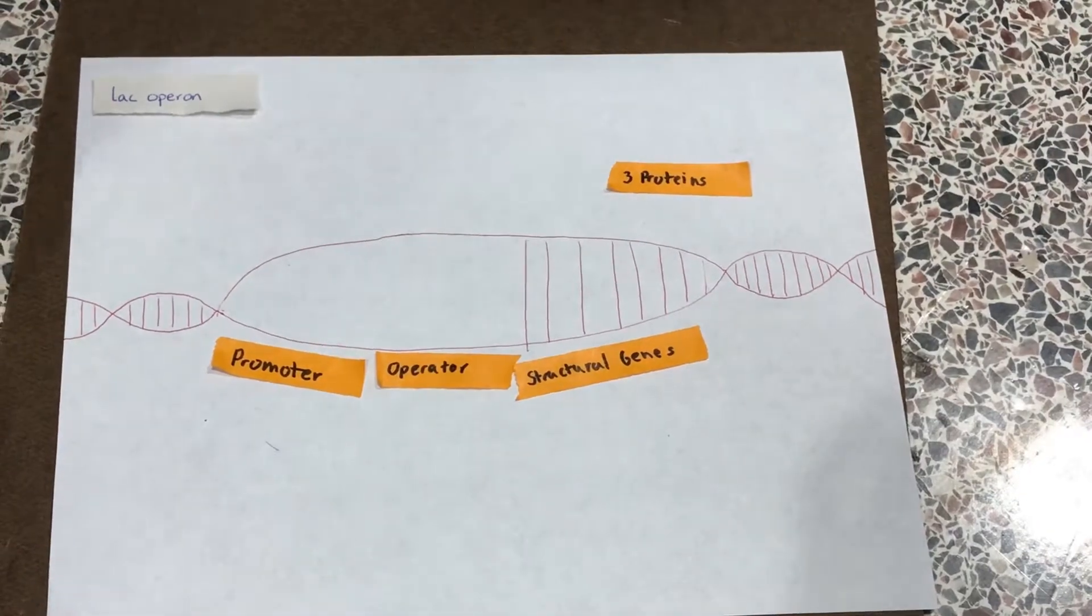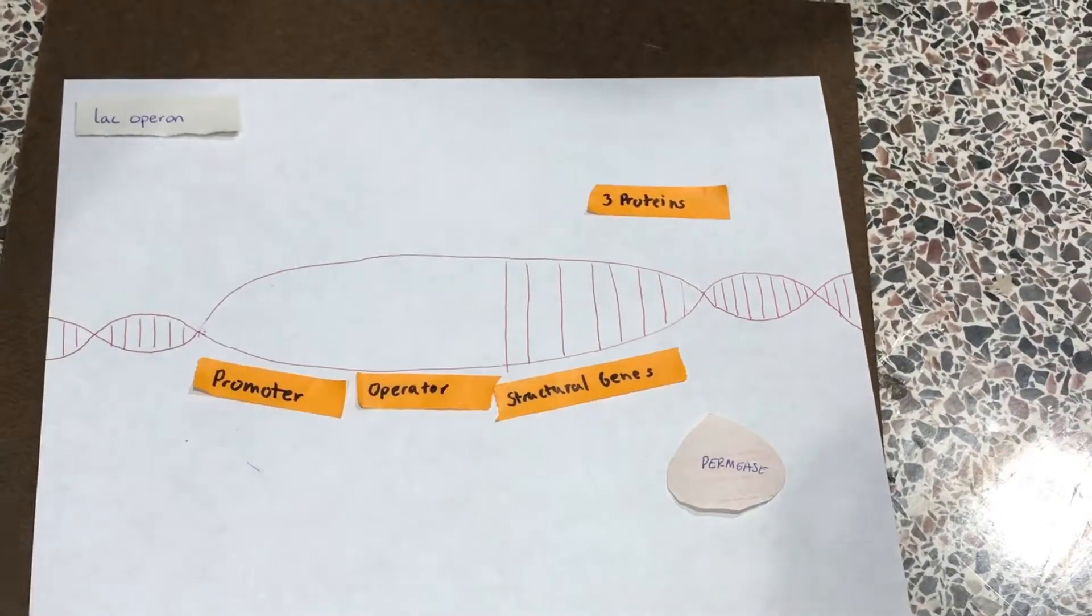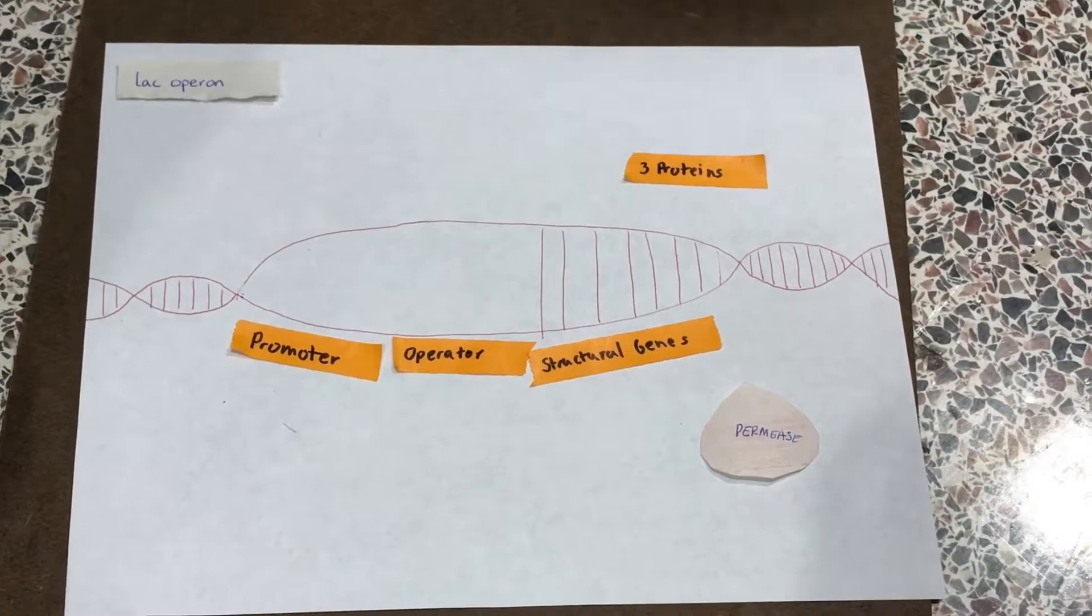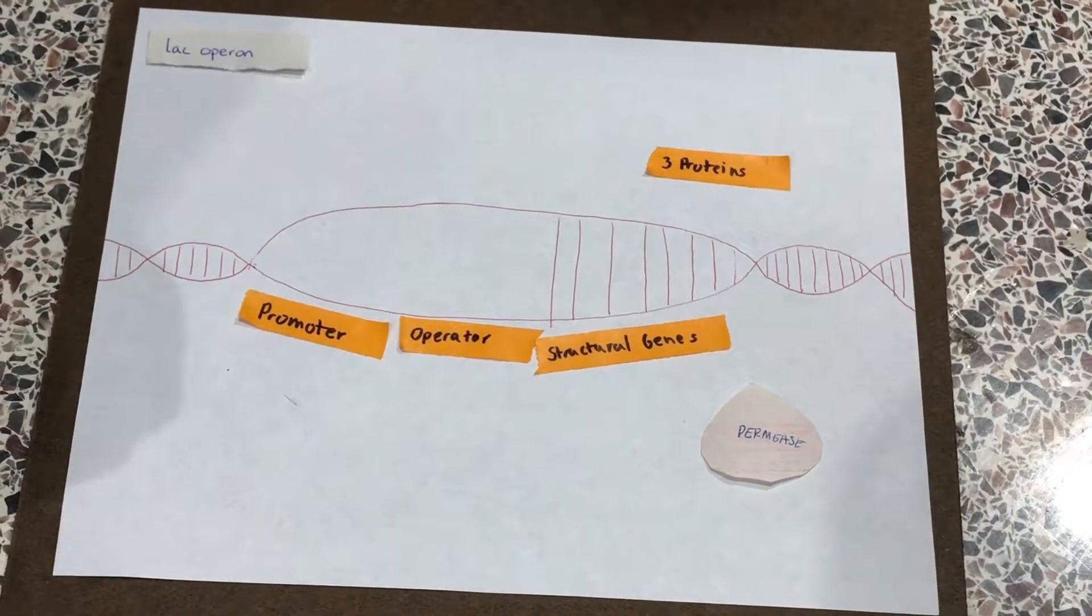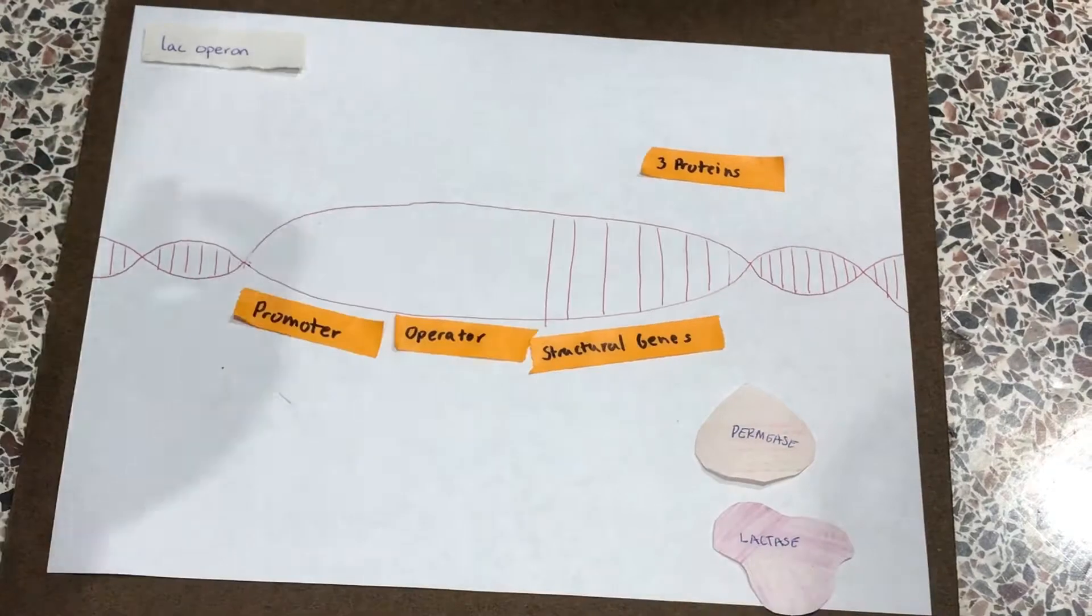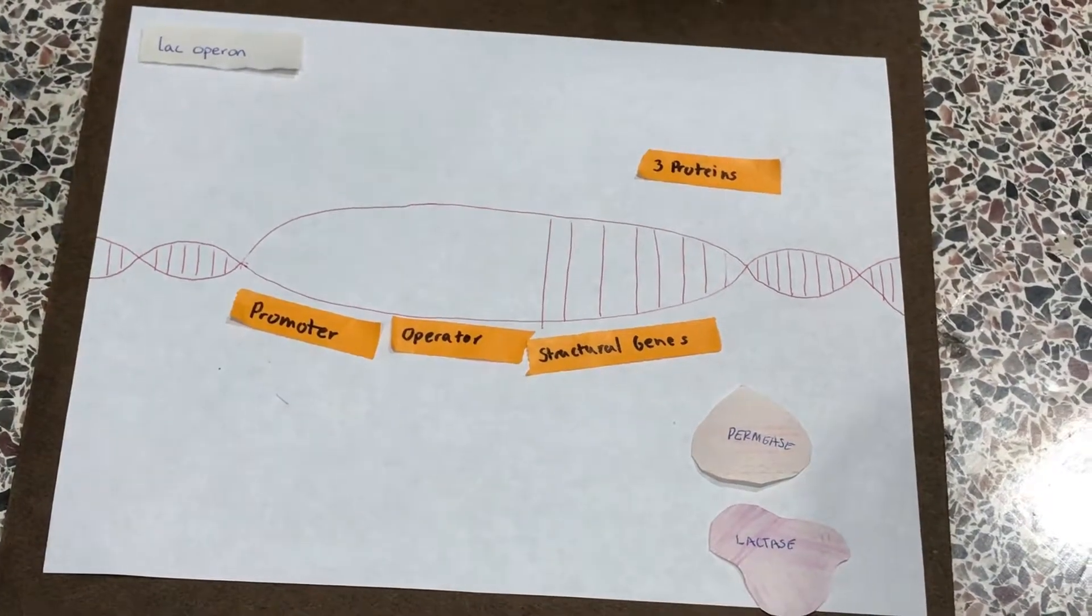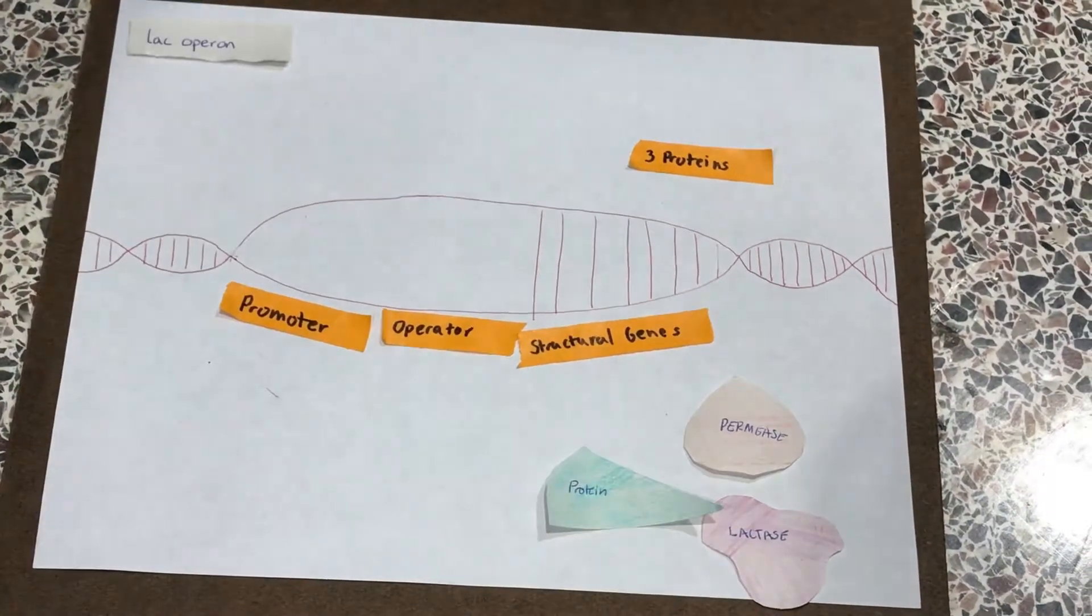The structural genes contain the information to code three proteins. The first is permease, whose job is to actively transport lactose into the cell through secondary active transport. The second is lactase which breaks down lactose, and the third is another protein.